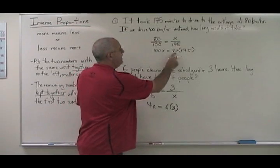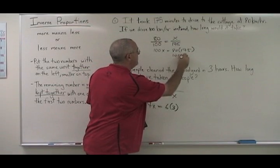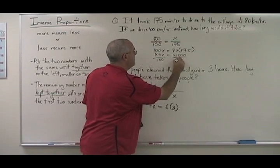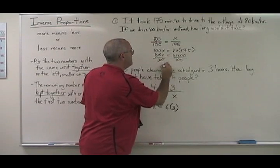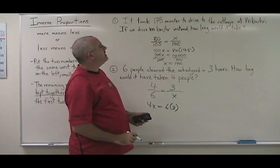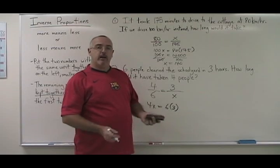80 times 175 is 14,000. x is therefore equal to 140. It would take 140 minutes to drive to the cottage if you were going at 100 kilometers per hour. And that answer makes sense.